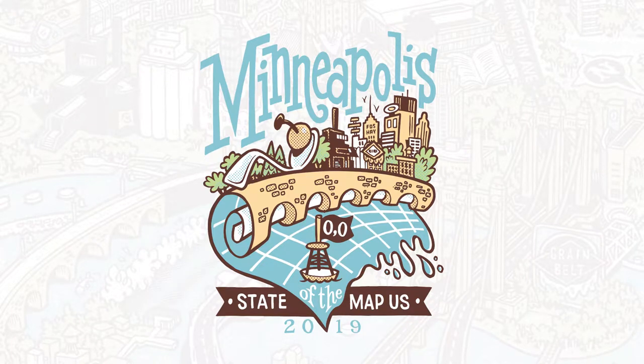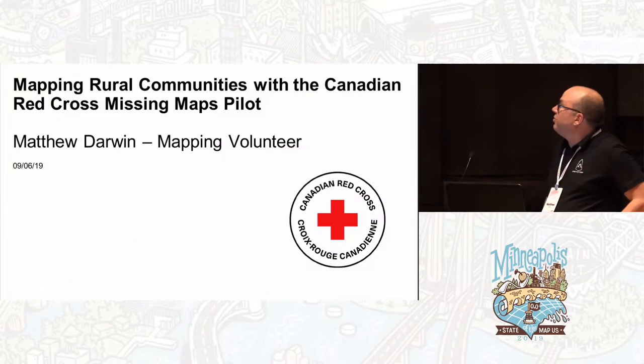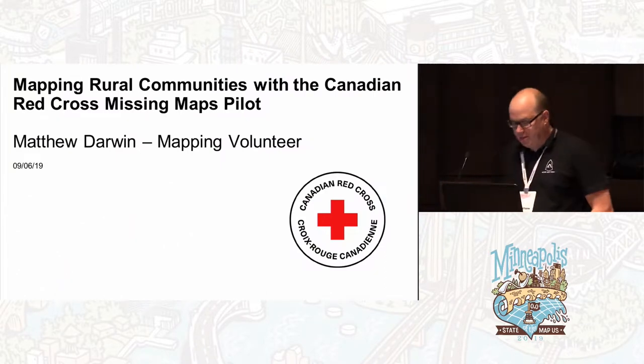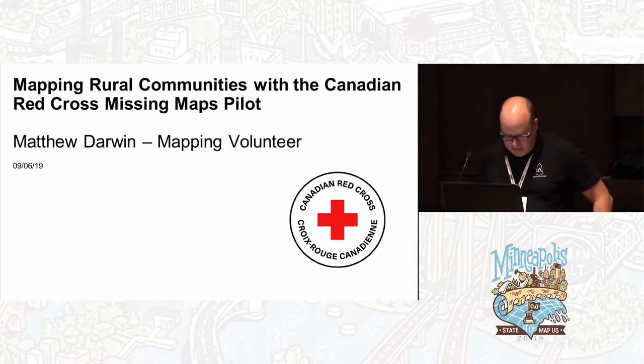My name is Matthew Darwin. I'm a volunteer with the Canadian Red Cross. I started volunteering earlier this year, but I've been mapping in OpenStreetMap for two and a half years now.